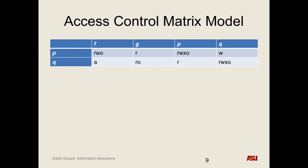Another benefit: fast lookup. The OS can look up whether a process has a right on a file as a simple index lookup. Drawbacks: the matrix itself can be too large to store in memory, requiring it to be stored in a file that must itself be protected. Every time a new process executes, an entire new row must be added.